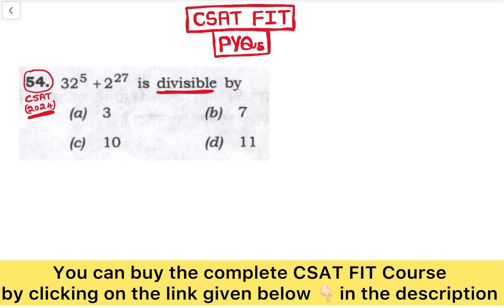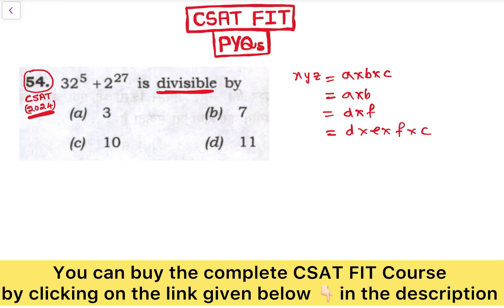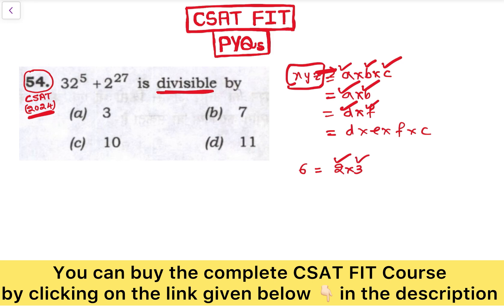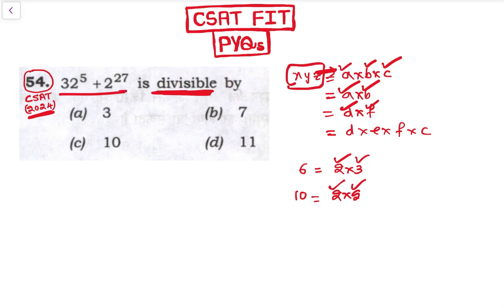See, any number — say XYZ — can be written in the form of A×B×C, or A×B, or D×F, or D×E×F×C. So all these factors divide the given number. For example, 6 can be written as 2×3, so 6 is divisible by 2 and by 3. Similarly, 10 can be written as 2×5, so 10 is divisible by 2 and by 5. So we need to figure out which number can be written in which form.